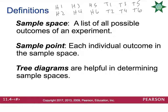A sample point is each individual outcome in the sample space. For example, if I bet on tail 2 coming up, that would be a sample point, which would be a 1 in 12 probability.